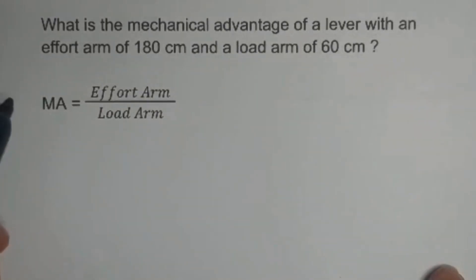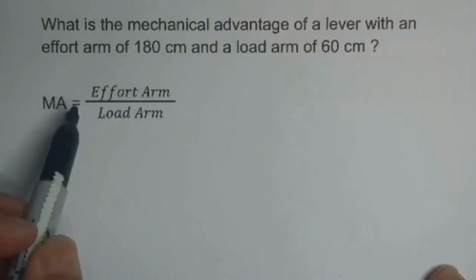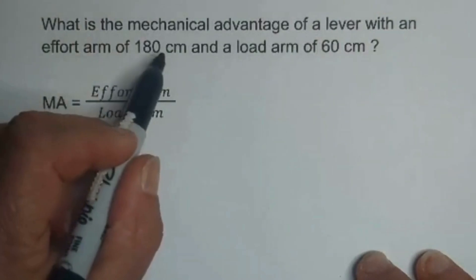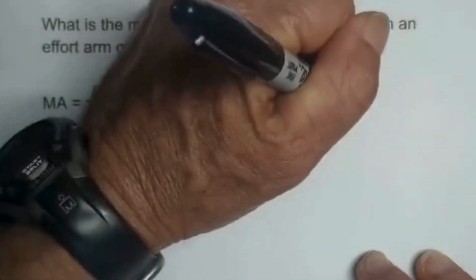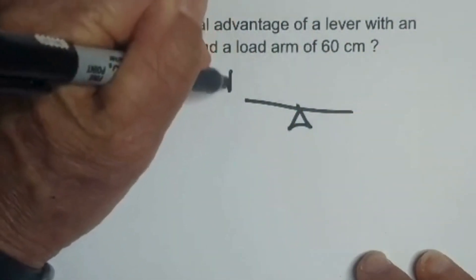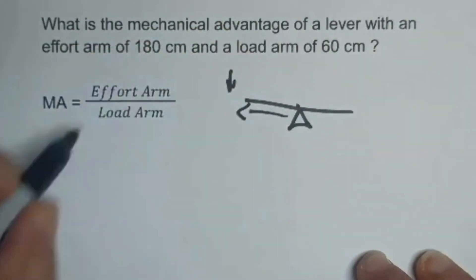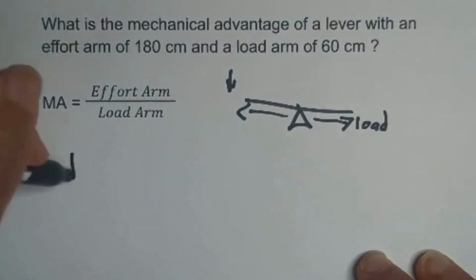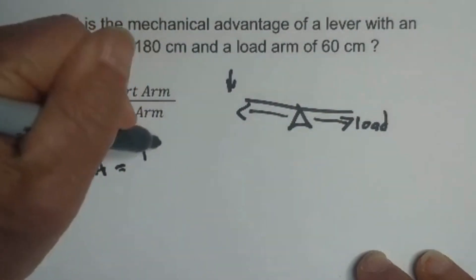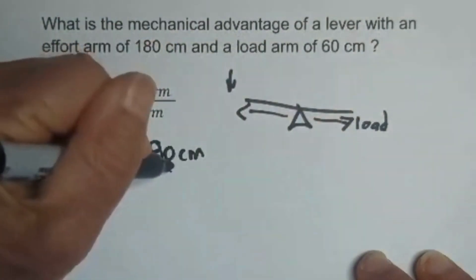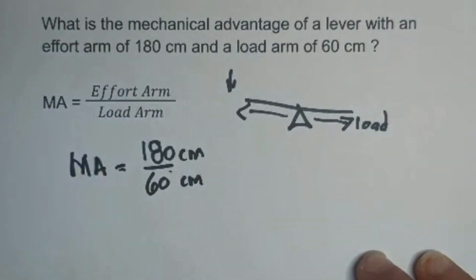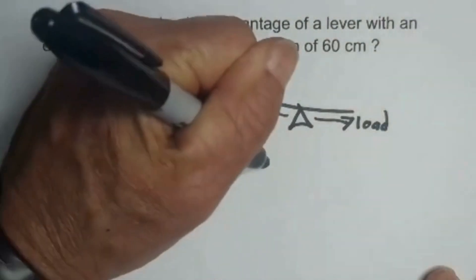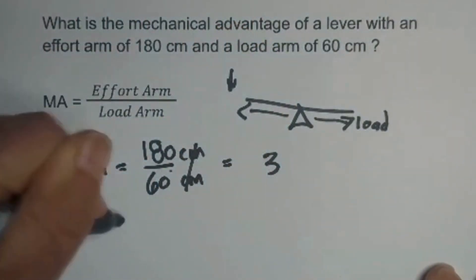With a lever, you can also calculate the mechanical advantage using the length of the effort arm divided by the length of the load arm. What is the mechanical advantage of a lever with an effort arm of 180 centimeters and a load arm of 60 centimeters? Mechanical advantage equals 180 centimeters divided by 60 centimeters. The centimeters cancel, and 180 divided by 60 equals 3. So the mechanical advantage equals 3.